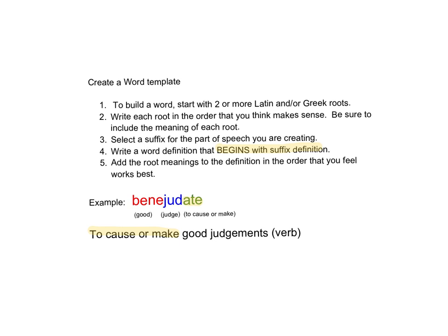Here's an example: the word benejudate. Bene means good, jud means to judge, and -ate means to cause or to make. So I start the definition with -ate: to cause or to make. Then I have bene and judge. 'Judge good' doesn't sound like it makes sense, so it sounds better to say 'good judgments.' So benejudate means to cause or make good judgments, and it's a verb. I can benejudate when I have to choose between right and wrong.